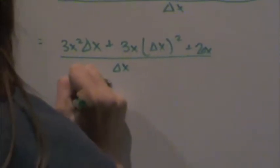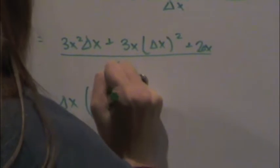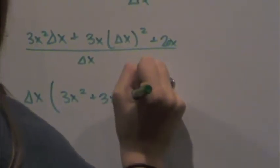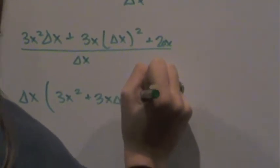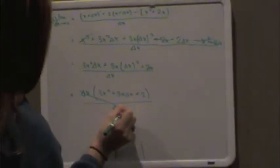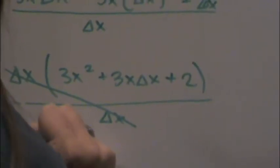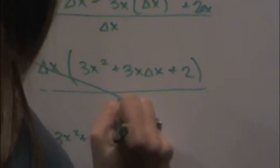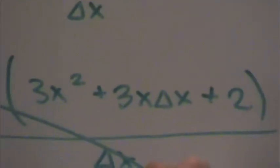And then you can factor out the change in x and then you can cancel this out. And then you're left with 3x squared plus 3x change in x plus 2.